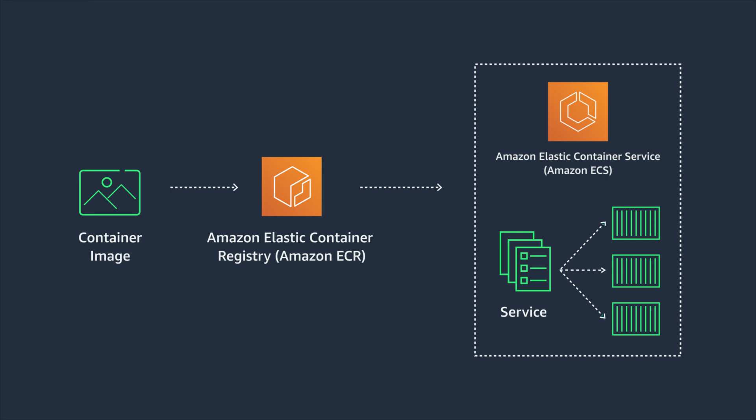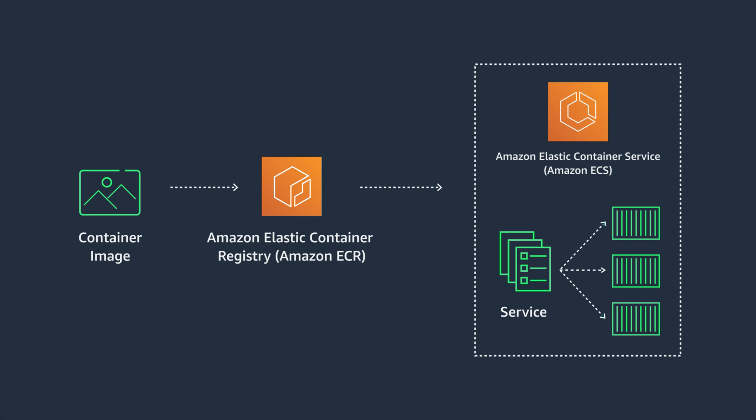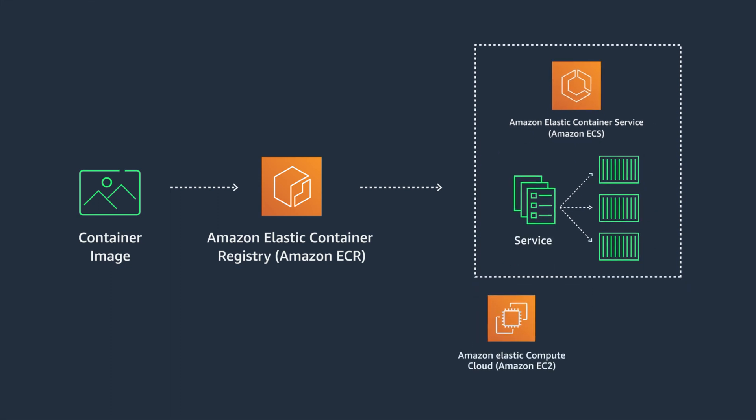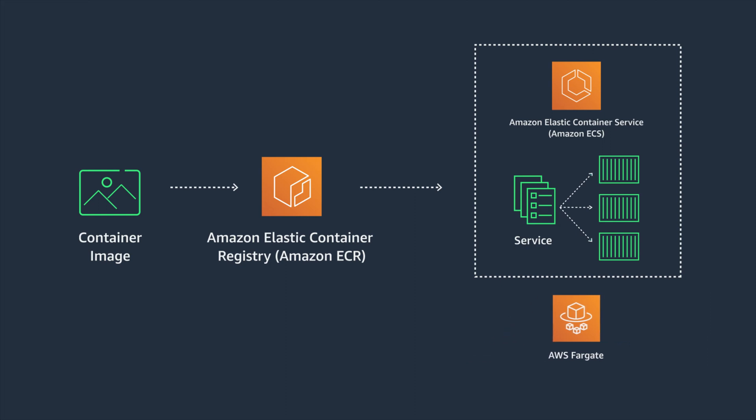I also need to decide if I want ECS to launch the container on an EC2 instance that I own, or through Fargate, which is a serverless way of running containers. I don't really want to spend time looking after the EC2 instance, worrying if it's healthy or too busy, and if everything's up to date. With Fargate, there is no underlying server to worry about. I can simply ask Fargate to start my container, and AWS will take care of the rest for me.